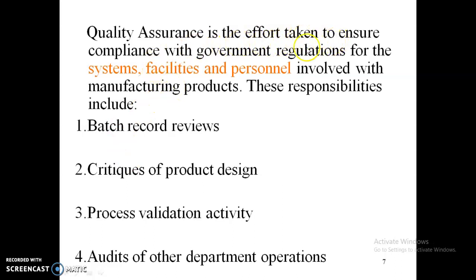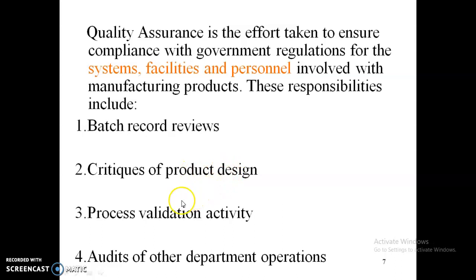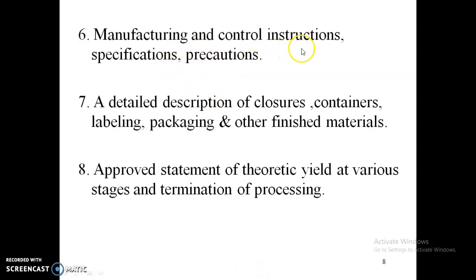QA is the effort taken to ensure compliance with government regulations by various regulatory authorities like FDA, for the systems, facilities, and personnel involved with manufacturing products. These responsibilities include batch record reviews — batch manufacturing record, batch formula record, batch processing record, batch packaging records, distribution records — as well as audits of other department operations including quality audits.